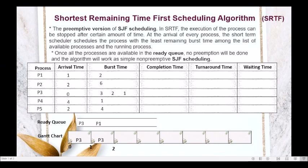At time 2, we check which processes arrived in the ready queue. Two processes — P2 and P5 — arrived at time 2. So the ready queue now has P3, P1, P2, and P5.